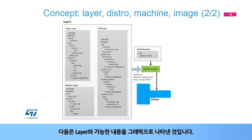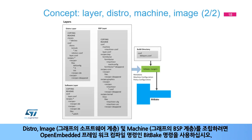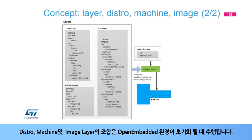Here is a graphic representation of the layers and their possible content. Each folder has a similar structure with configuration files and recipes. To assemble a distro, an image (or software layer in the graph), and a machine (or BSP layer in the graph), use the BitBake command, which is the command to compile with the OpenEmbedded framework. The combination of the distro, machine, and image layers is done when the OpenEmbedded environment is initialized.